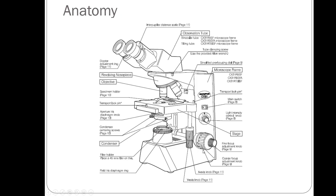The focusing knobs are really important. The coarse adjustment knob is the large one — it moves the stage up and down dramatically, so you can see the stage moving significantly when you use it. The fine adjustment knob is the smaller one and causes very small changes in the stage position. Generally, you get the specimen into focus with the coarse adjustment knob and then use the fine adjustment knob to fine-tune the focus.